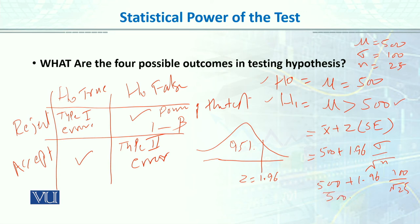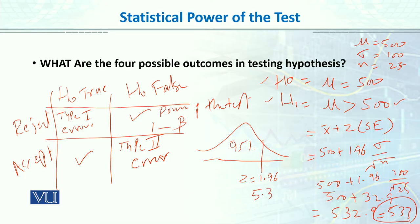So 500 plus 32.9 equals 532.9, approximately 533. This is our critical value. If the activity level exceeds 533, it falls in the rejection region — the rejection region for the null hypothesis. So any sample value greater than 533 leads us to reject the null hypothesis.